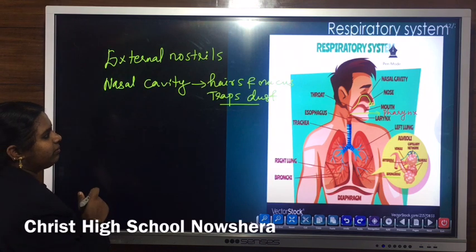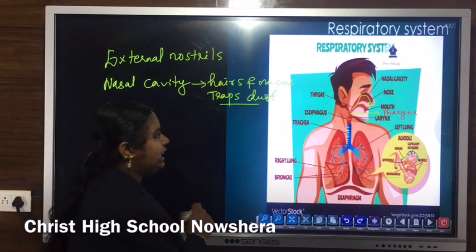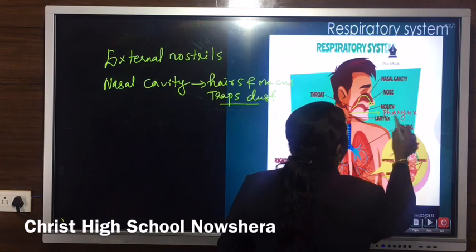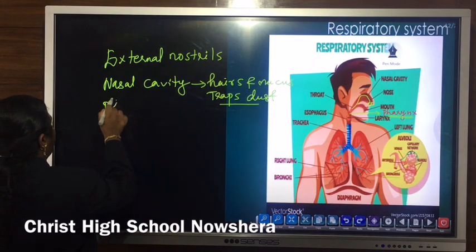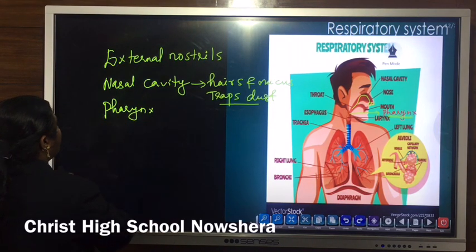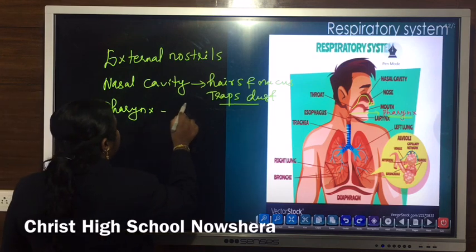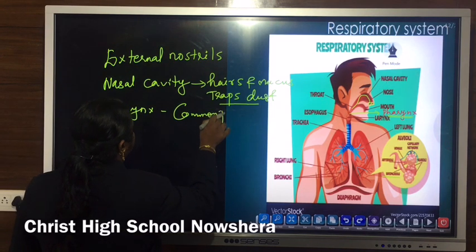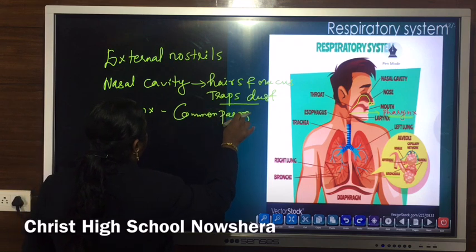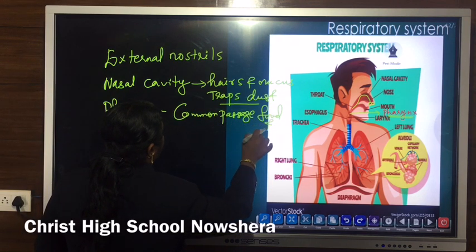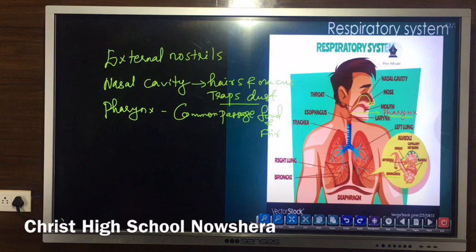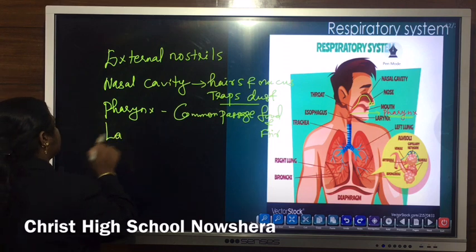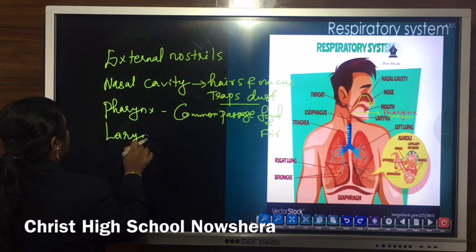Another part of the respiratory system: the nasal cavity leads downward to the pharynx. The pharynx forms the common passage — it is the common passage for both food and air.